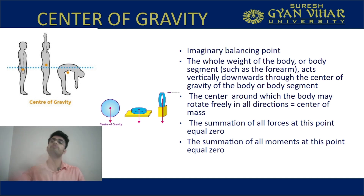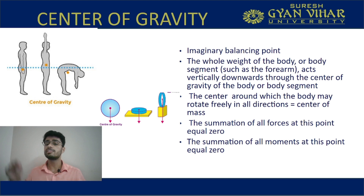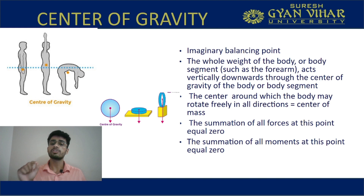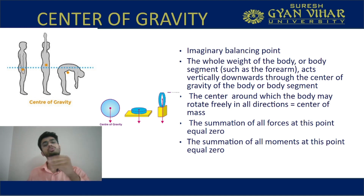Remember, the whole weight of the body or the body segment acts at the center of gravity. Center of gravity can be defined for the whole body as well as for individual body segments. We already discussed this when we discussed the radius of gyration — the distance between the center of mass or center of gravity to the fulcrum. The whole weight of the body or body segment acts vertically downward through the center of gravity.